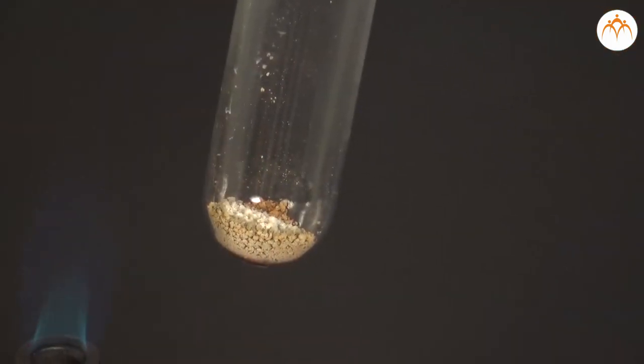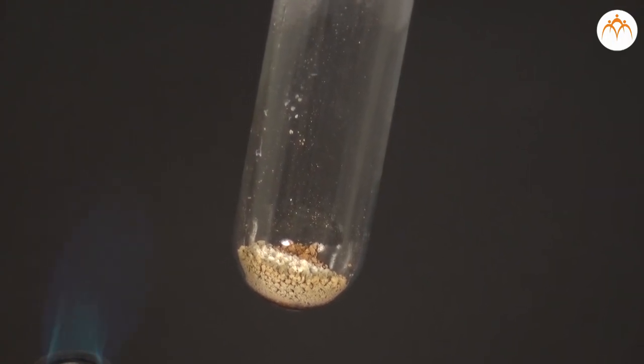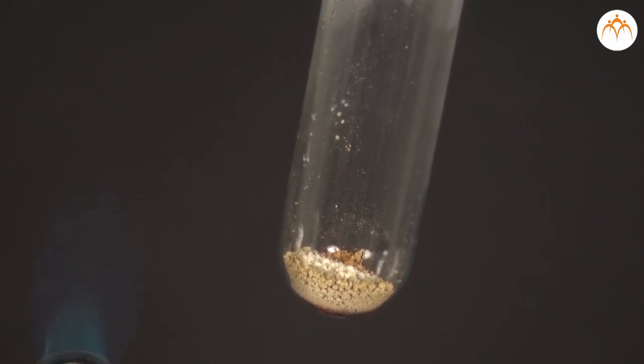On heating, the pale green coloured crystals of ferrous sulphate undergo decomposition. A mixture of ferric oxide Fe2O3, sulphur dioxide SO2, and sulphur trioxide SO3 are formed. A residue of brown colour remains in the test tube.